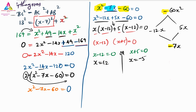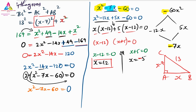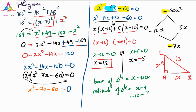The base of a right angle triangle must be positive, so X equals 12 is the correct answer. Therefore: base equals X equals 12 cm. Altitude equals X minus 7 equals 12 minus 7 equals 5 cm. We have found both sides: altitude is 5 cm and base is 12 cm. That is the answer to the fifth question.